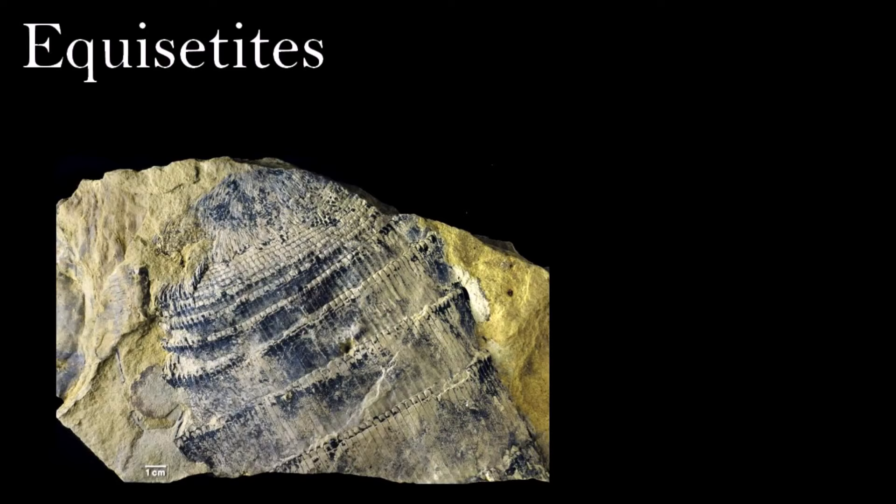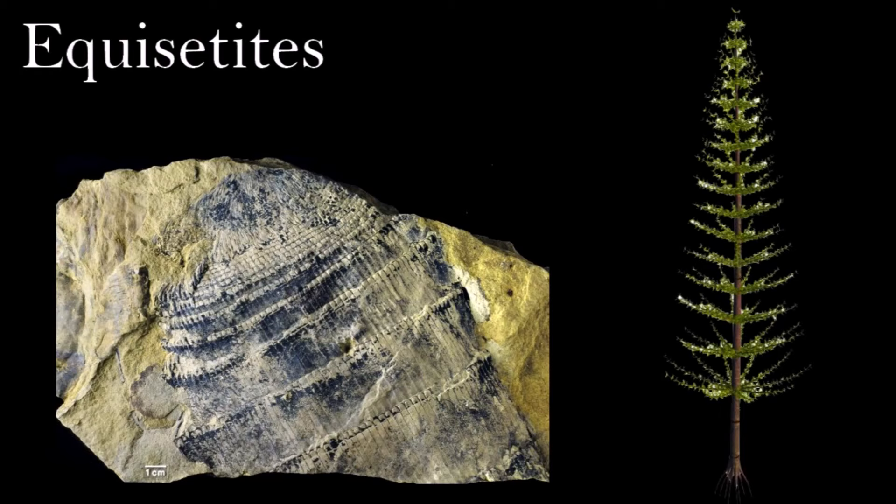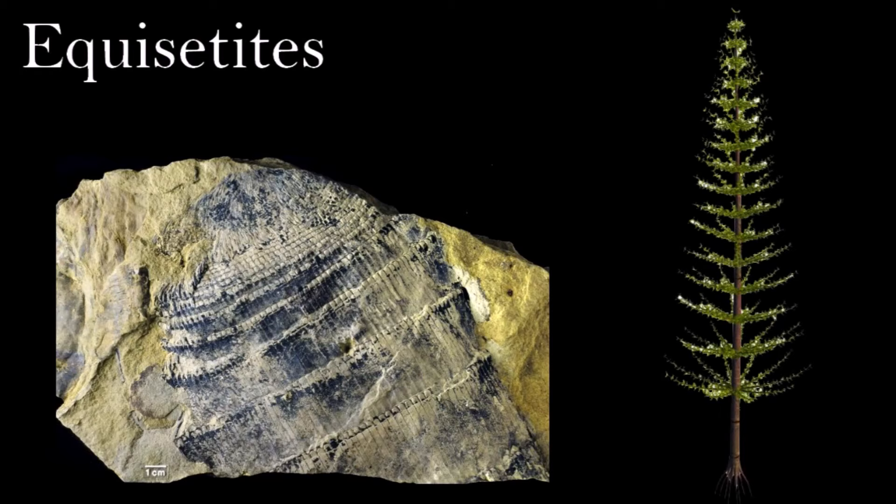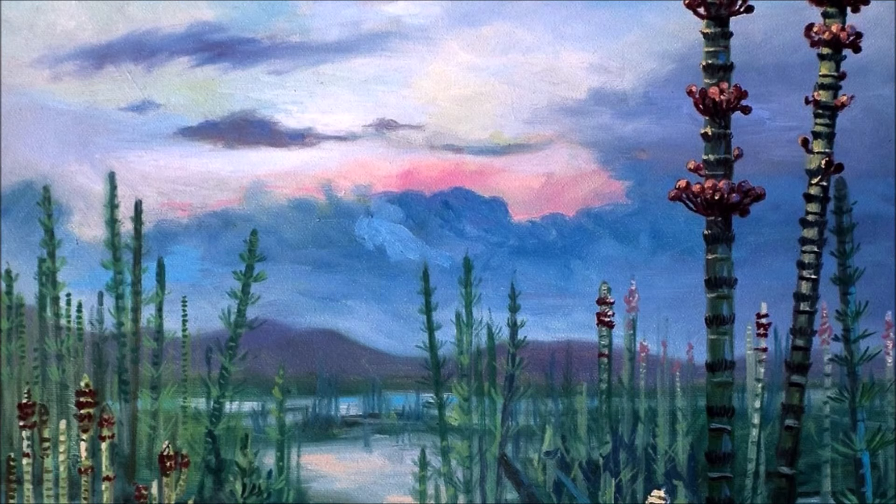Fossil casts of Equisetum stems, with clear ribs running along their length and more widely spaced crossbars, are frequently found in the Jurassic. They are particularly common in rocks that formed along riverbanks or the shores of lakes, where the plants probably grew at the water's edge. They look very similar to the stems of living Equisetum, but many are larger than any living species.